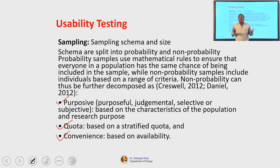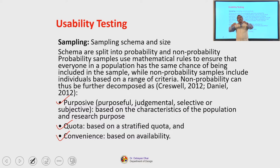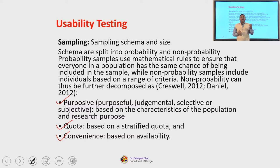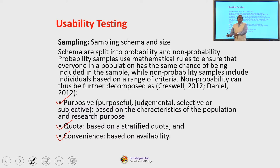We can also have quota sampling — gender can be a quota, or income range can also be a quota, and there can be strata based on which these samples can be extracted. For example, we want to focus on male gender, above the age of 35 but below 60, who are working in software — that is a strata, or stratified sampling. The first strata is male gender, the second is the age 35–60, the next is people who only work in software. There can be other strata such as product managers only. This is quota sampling.